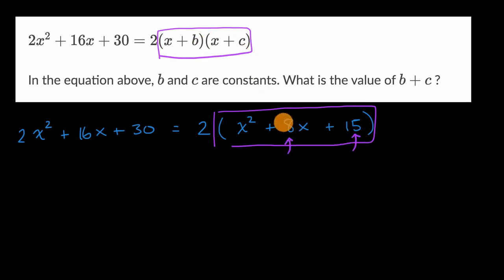This is one of our main factoring techniques. So B plus C needs to be equal to 8. And B times C needs to be equal to 15. And if we figure that out, then we can factor completely.